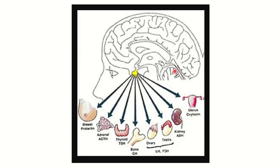The growth hormone and other hormones released from the pituitary gland are responsible for growth and development of the bones and soft tissue of the body. Any tumor that causes increased growth hormone secretion from the pituitary gland leads to enlargement of all types of bone and soft tissue.